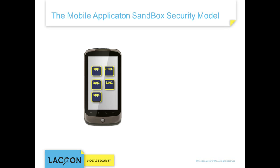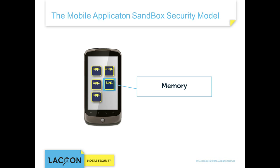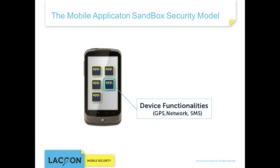Under this model, each mobile application is executed in its own separate environment. Each application is allocated its own separate storage space, and it is assigned to run in a specific memory location. Each app is also entitled to perform only a specific set of device functionalities, such as GPS, network, and SMS.